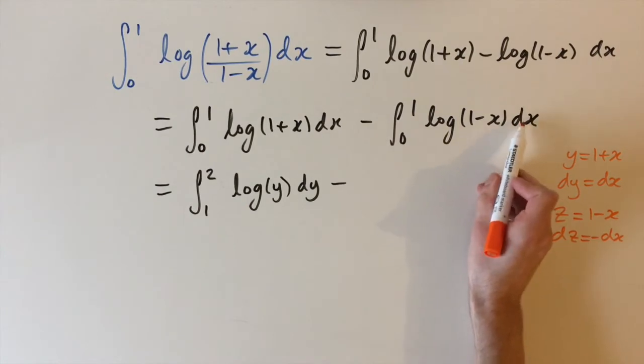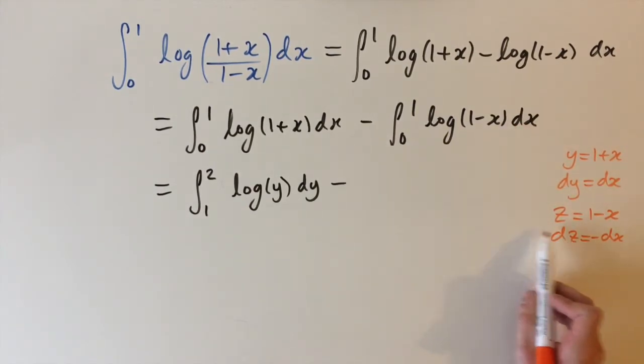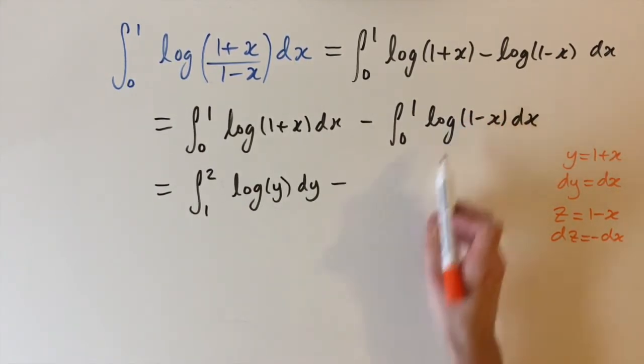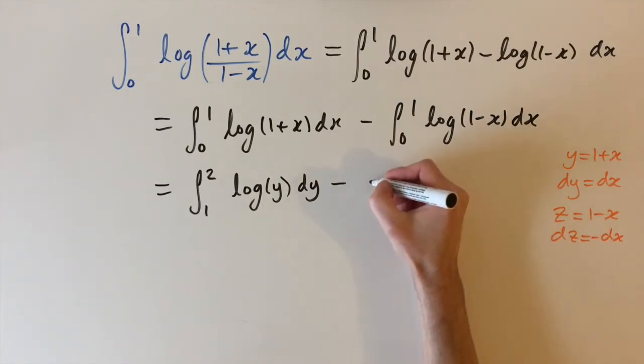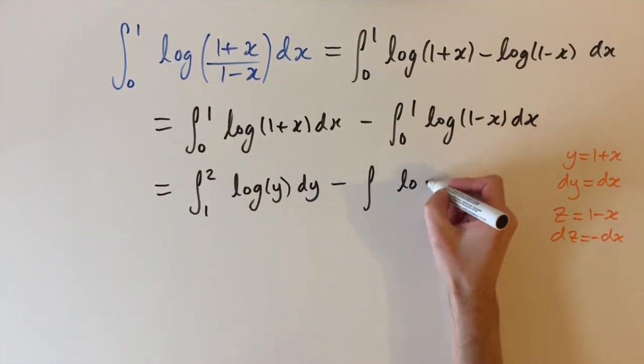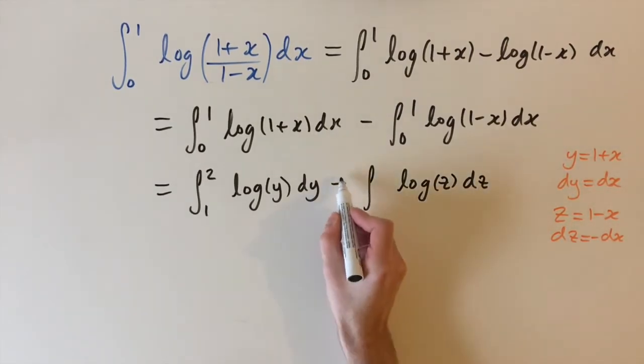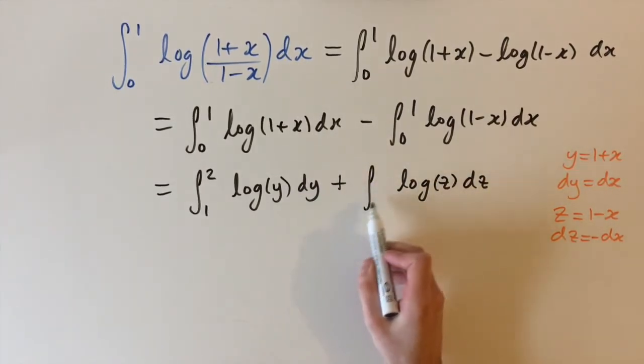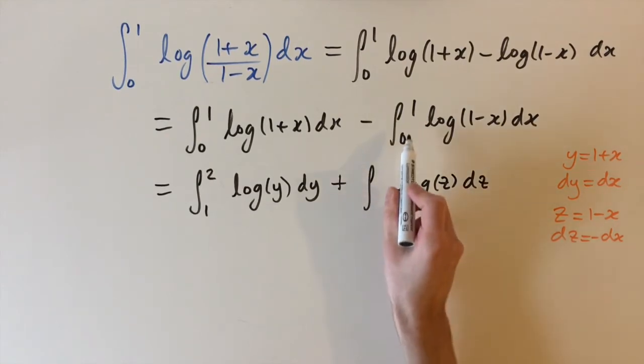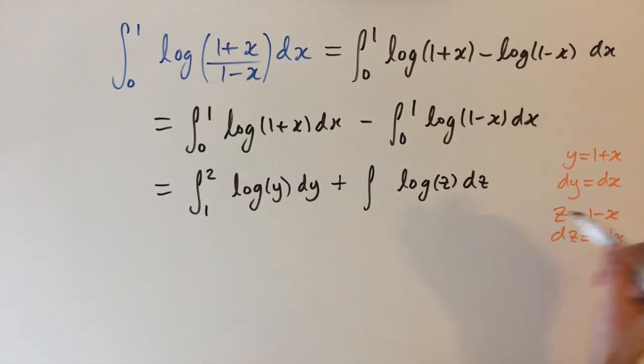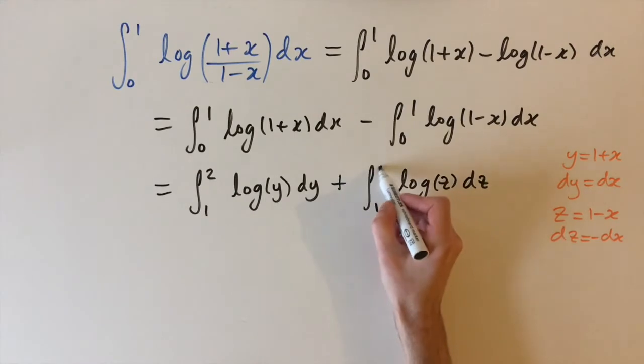So dx is replaced by minus dz and then in here 1 minus x is replaced by z. So we have the integral of log of z dz and then I'm going to bring this minus sign free so we have a plus here and then we just need to look at the limits so 0 and 1 put it into this equation we actually get 1 and 0.